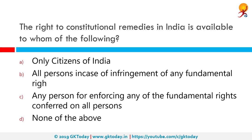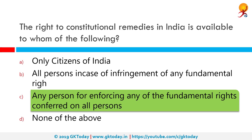The right to constitutional remedies in India is available to any person for enforcing any of the fundamental rights conferred on all persons. The fundamental rights under Articles 14, 21, 21A, 22, 23, 24, 25, 26, 27 and 28 are available to both citizens as well as non-citizens who are not enemy aliens. Any violation of these will attract enforcement of Article 32 of the Indian constitution on direction by the Supreme Court of India.